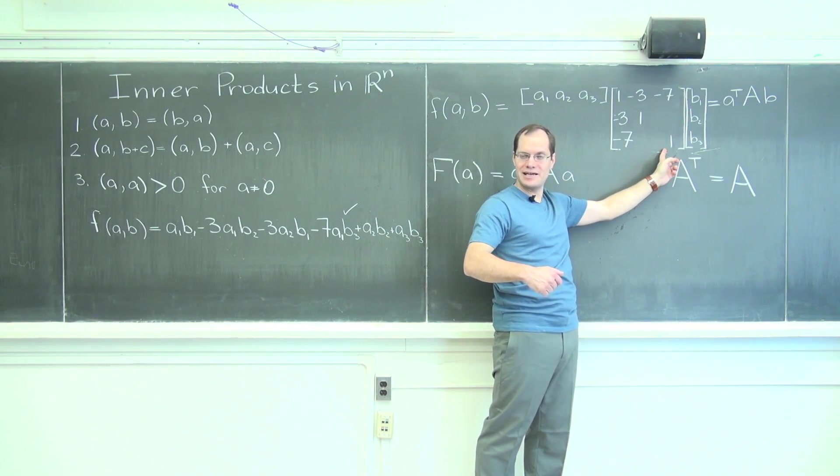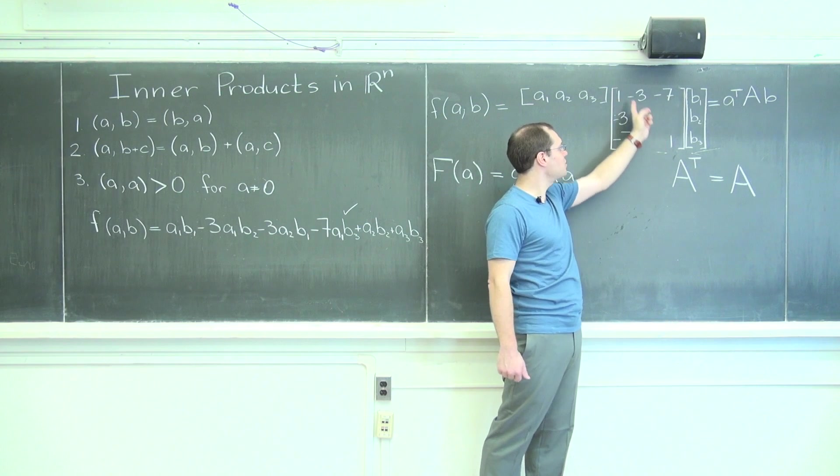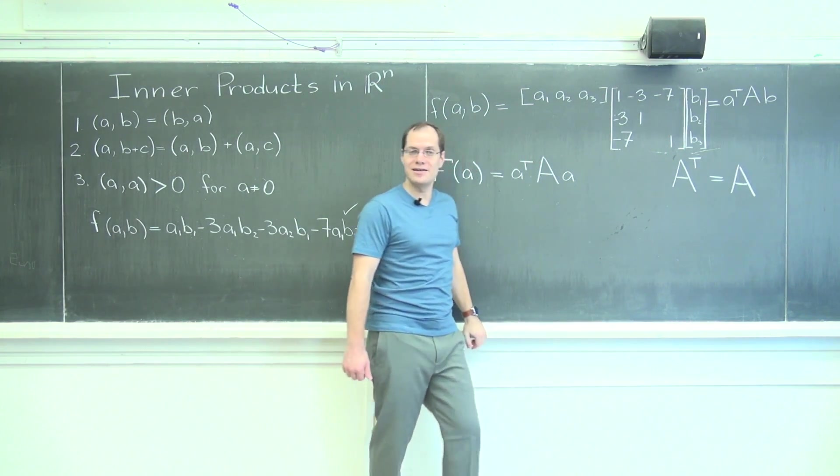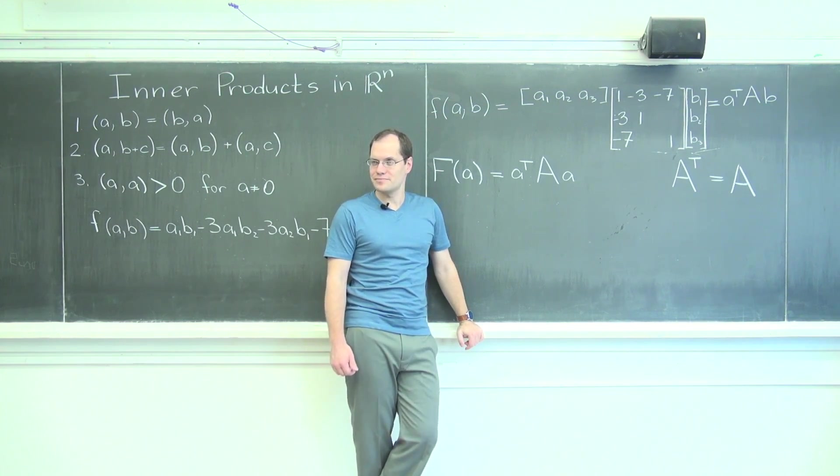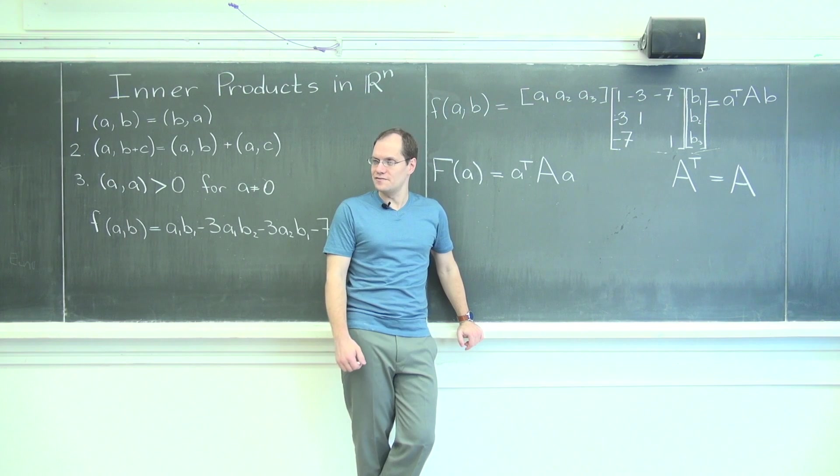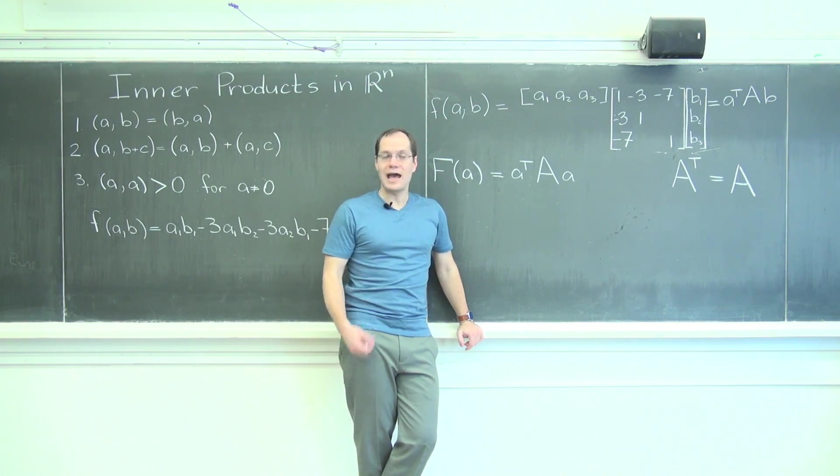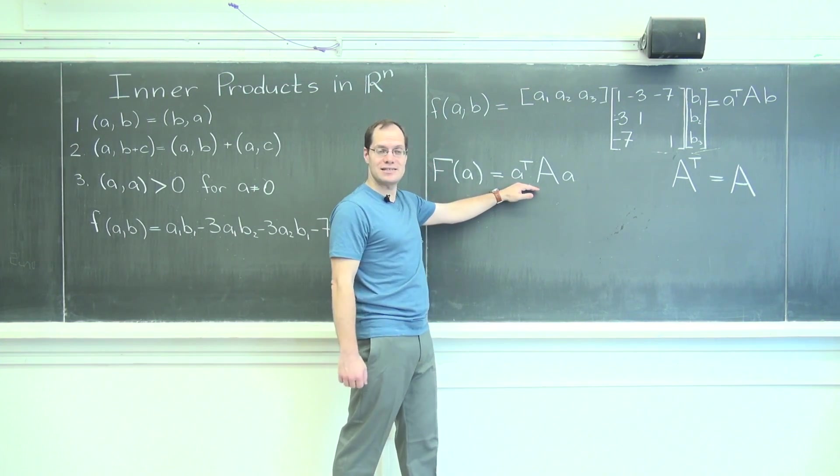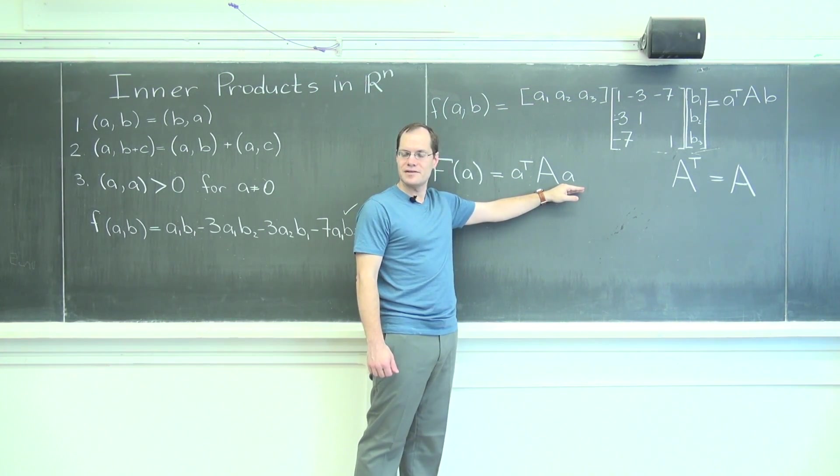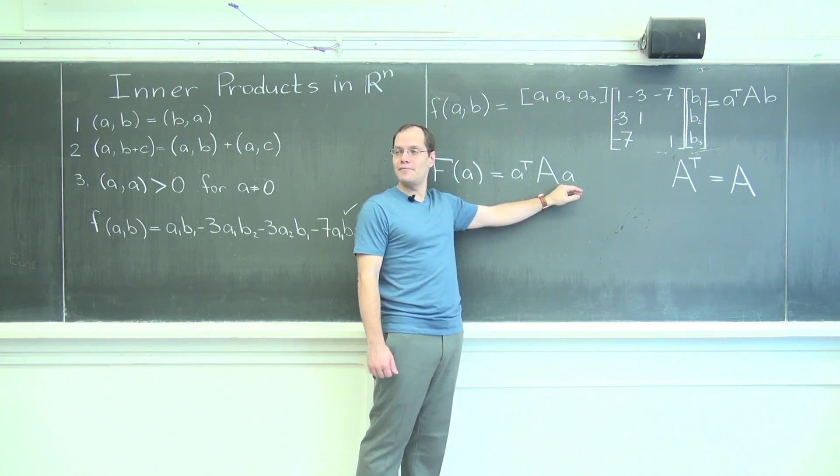And then the diagonal entries, which is A1 multiplying A1 and A3 multiplying A3, will only contribute two. So, clearly, for the vector one, zero, negative one, you would get a negative answer, I believe it will be minus twelve. And so, this is not positive for that particular A. This needs to be positive for all vectors A that are not zero. So in this case, it's obvious.